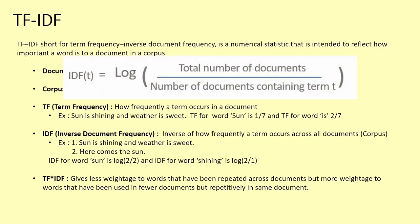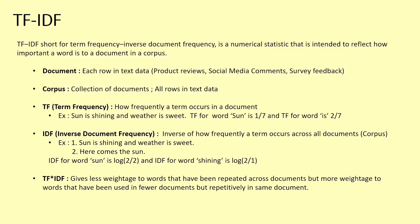IDF — inverse document frequency — gives you an idea about how frequently a term occurs across all documents. If a term occurs more frequently across documents, the IDF value is low because it's an inverse of document frequency. If a term occurs fewer times across documents, the IDF value is higher. For example, with sentences 'sun is shining and weather is sweet' and 'here comes the sun,' the IDF for 'sun' is log of two by two, since it appeared in both documents. The IDF for 'shining' is log of two by one, since it appeared in only one document.